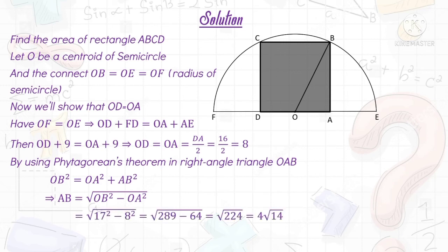OB = 17 and OA = 8. Then we have AB = √(17² - 8²) = √(289 - 64) = √224 = 4√14.